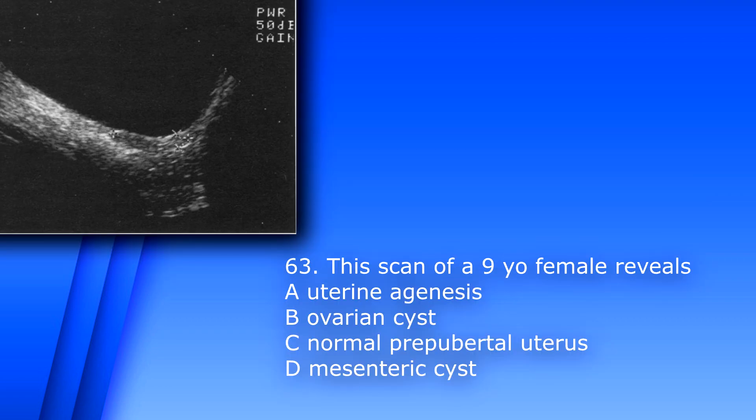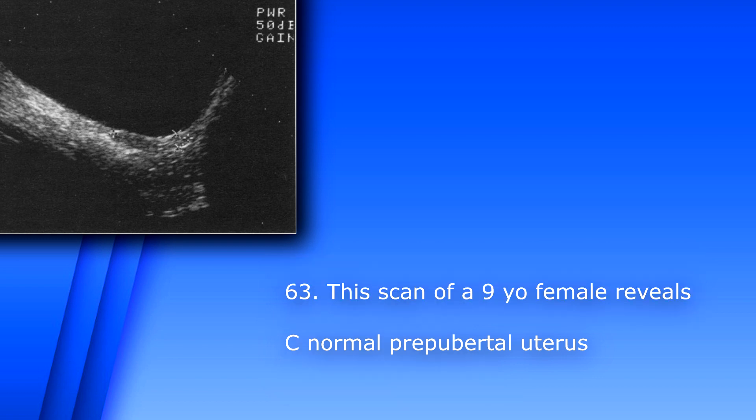Question 63. This scan of a 90-year-old female reveals: A. Uterine agenesis, B. Ovarian cyst, C. Normal prepubertal uterus, D. Mesenteric cyst. The answer is C, Normal prepubertal uterus. Before puberty, the female uterus is very small and tubular.